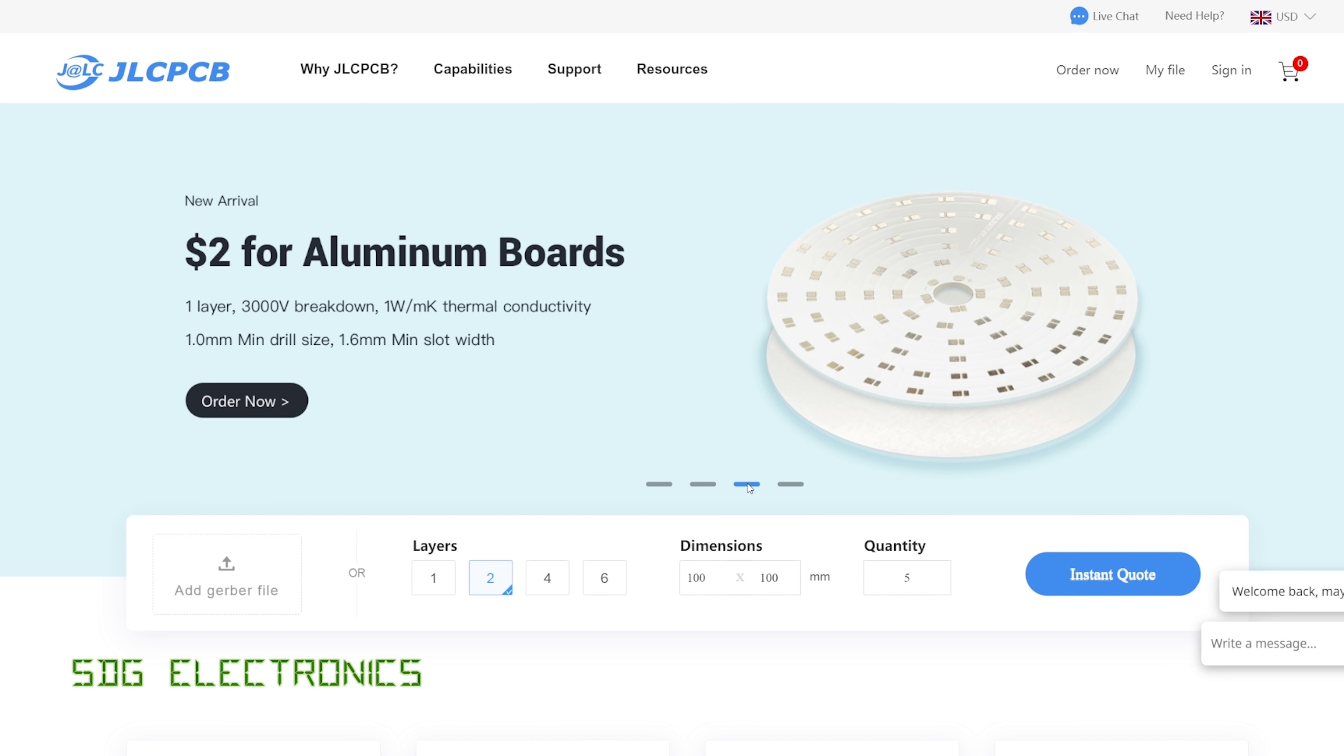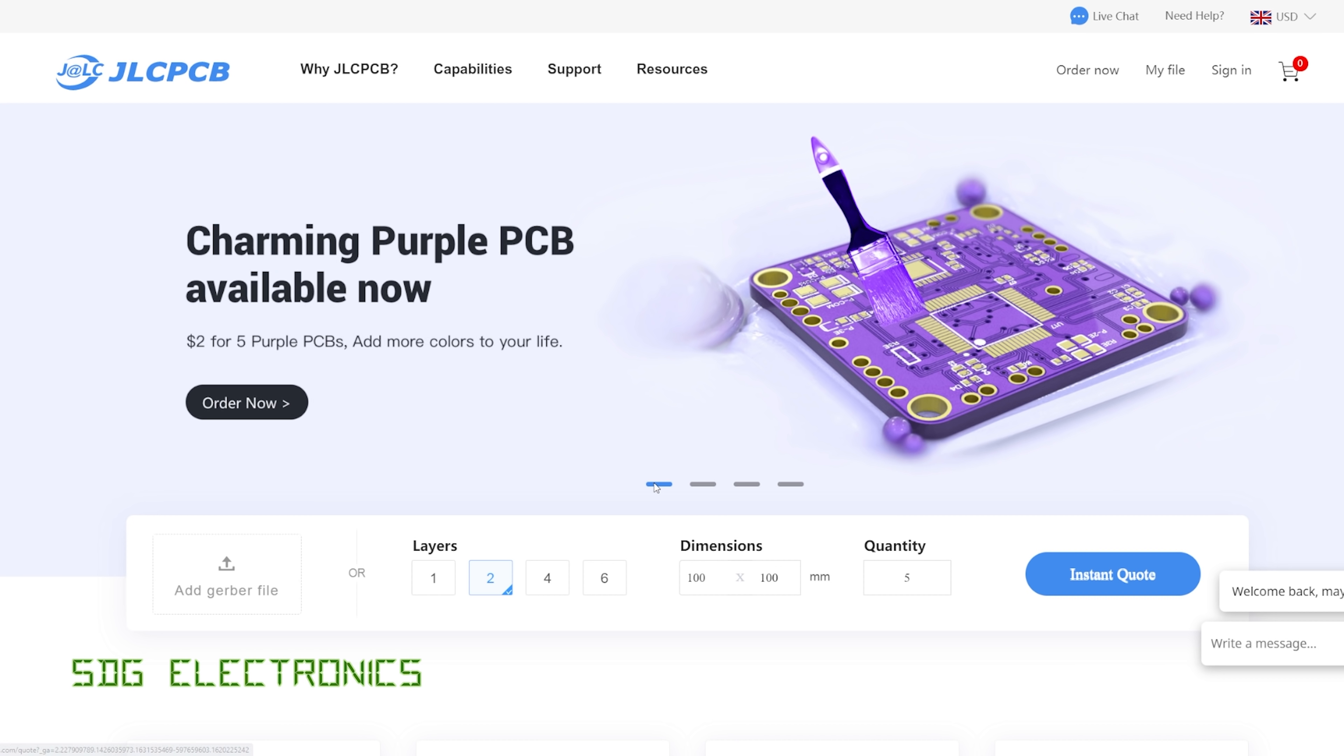Now might be a good time to mention that at JLCPCB you can now get aluminium PCBs made, starting from $2 for five PCBs up to 100 by 100 millimetres, so a really good price. If you want them bigger you can get them made but you do need to pay a bit more money. They have also added purple PCBs to their list of colours for standard FR4 boards if you're looking for something that stands out a bit more.